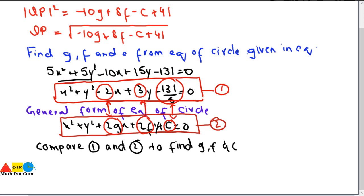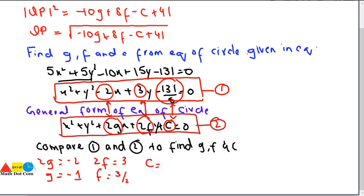Comparing the equations: 2g = -2, so g = -1. Then 2f = 3, so f = 3/2. And c = -31/5. Now we have the values of G, F, and C.